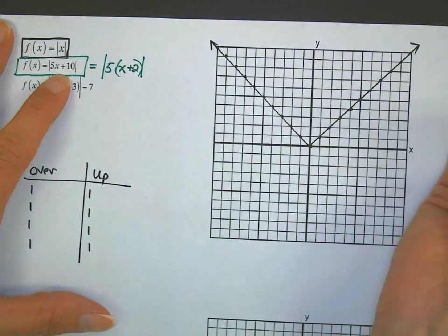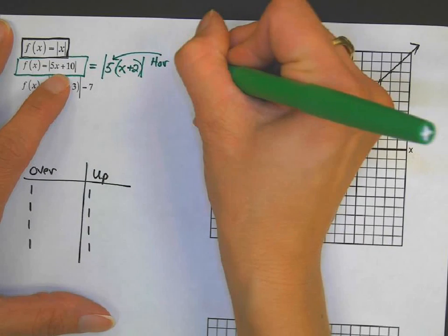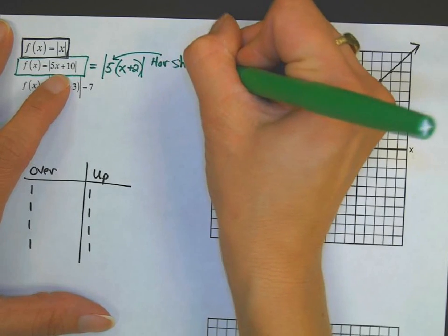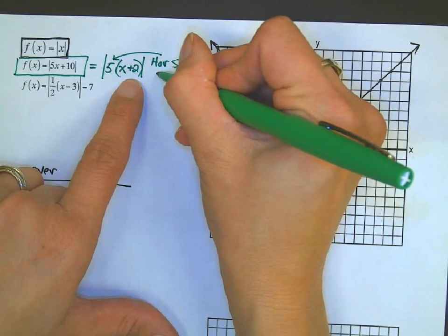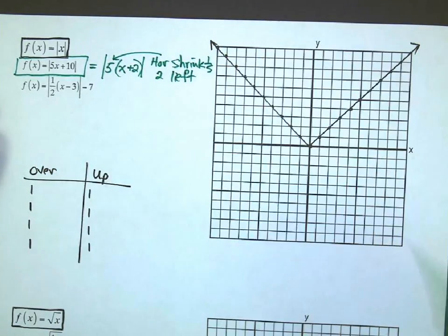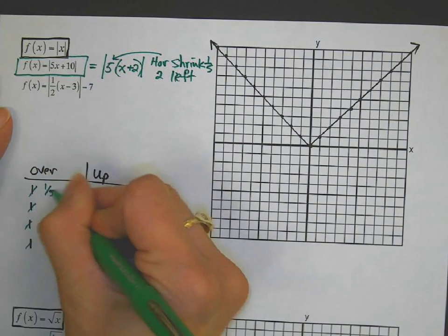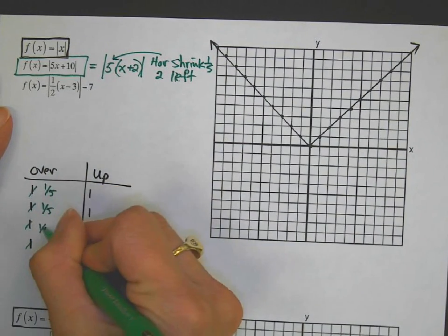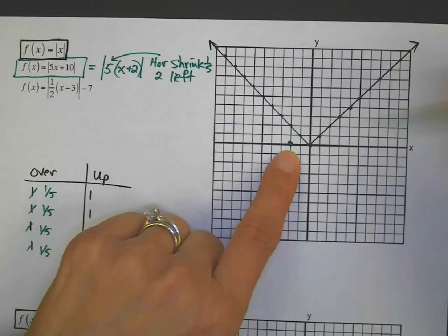So there's two transformations that need to happen here. This five means horizontal shrink by a fifth, and he also has to get shifted two units to the left. Horizontal numbers are the overs, so all of the overs become one-fifth. Let's start two units to the left.